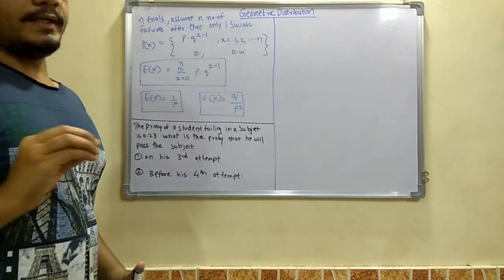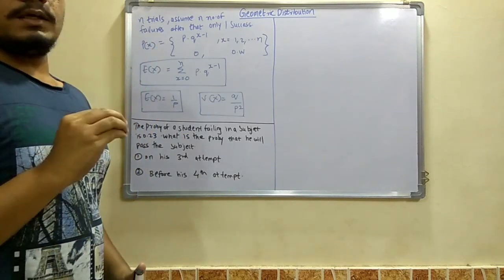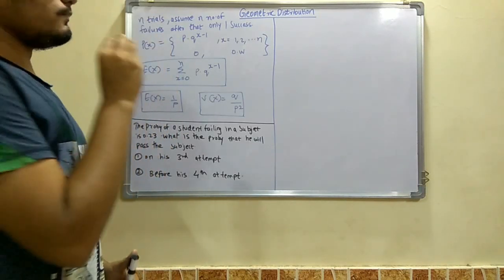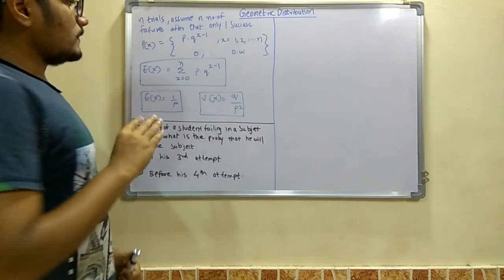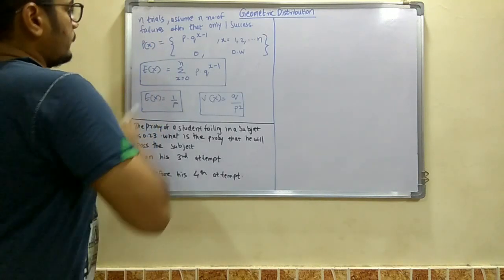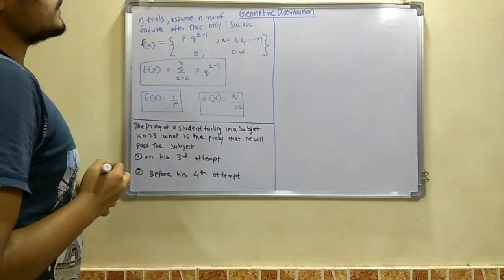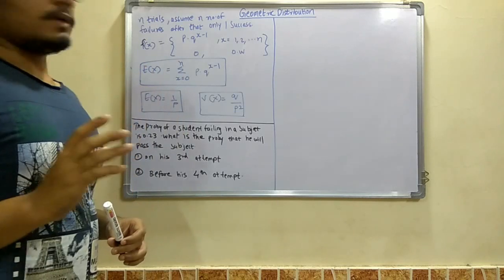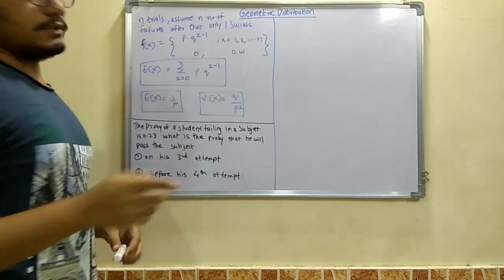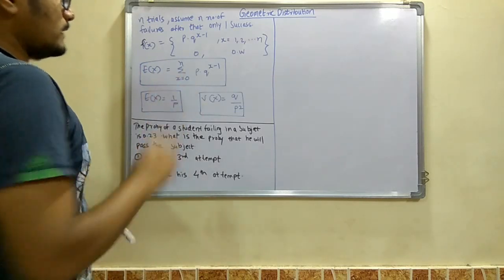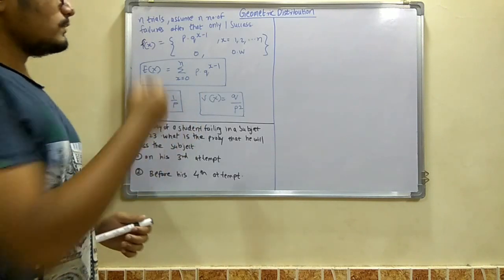That is the main idea or those are the cases where we use geometric distribution and find the solution. Next we have the p of x, not p of x is the f of x, that is the function which is p into q raised to x minus 1, and x ranges from 1 up till n. And you have 0 otherwise; if that is not the case, if it is a negative value, then it is 0.